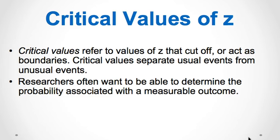Another way to separate usual from unusual events is to look at critical values. Critical values are the boundaries that cut off or separate what is considered a usual event from what is considered an unusual event. For z-scores, we can use the standard normal table to determine probabilities. For t-distributions, f-distributions, and chi-square distributions, we use critical values to determine the likelihood of getting a particular score or a particular sample mean. Graphing calculators and computers can determine the actual probabilities for these distributions. For the purposes of our class, we will be using critical values to construct confidence intervals, which are discussed in Chapter 8, and to test hypotheses, which are discussed in Chapter 9.